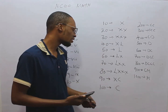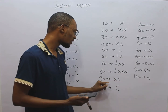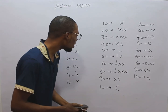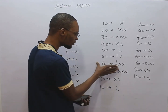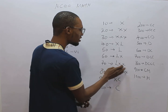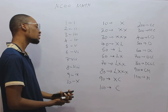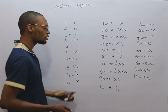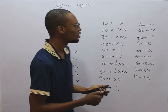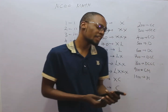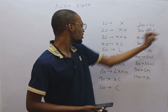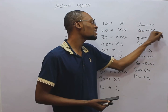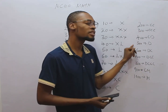60 is LX, 70 is LXX, 80 is LXXX, 90 is XC, and 100 is C. So 170 will be CLXX, and 178 will be CLXXVIII — you simply combine them. 200 is CC, 230 is CCXXX, 300 is CCC, 400 is CD, 500 is D.